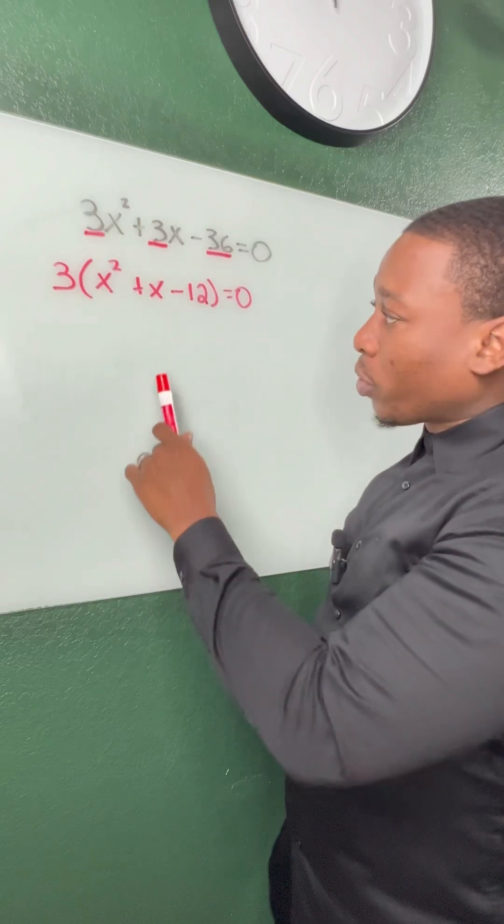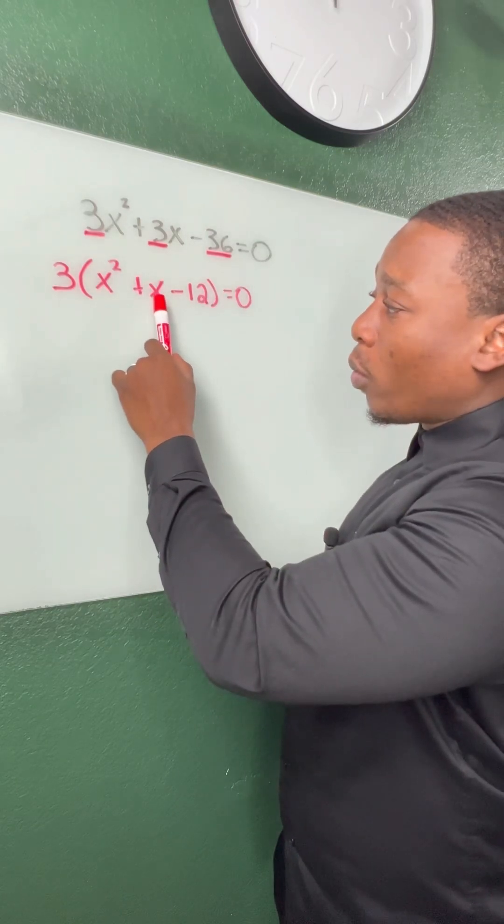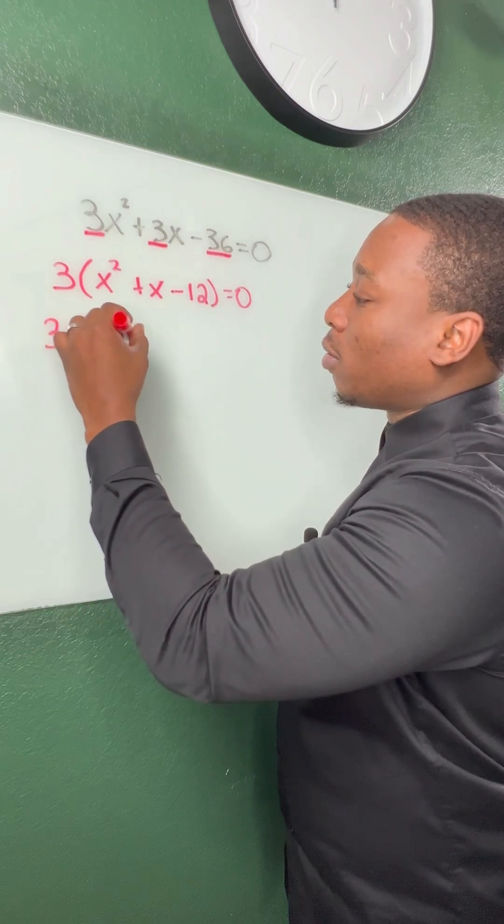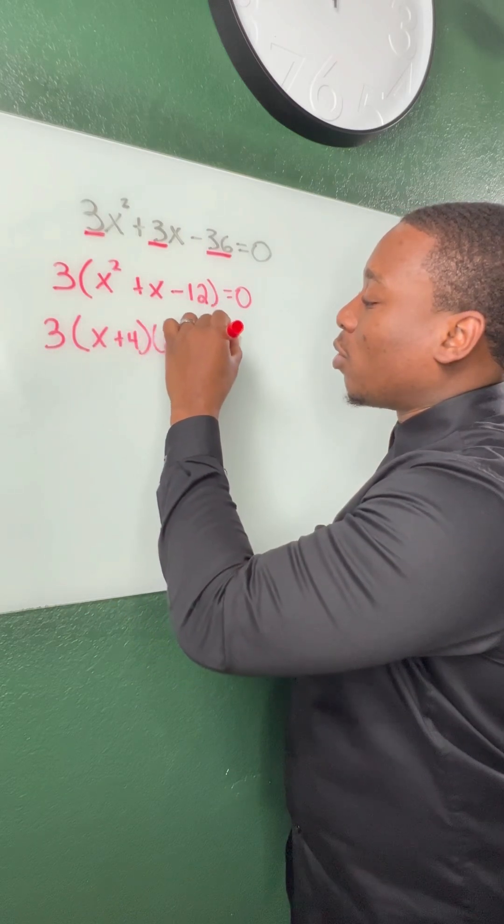And now we're focusing on two factors that multiply to give us a negative 12, and when we add them, they give us a positive 1. So when we break this down, we're going to have x plus 4 times x minus 3 is equal to 0.